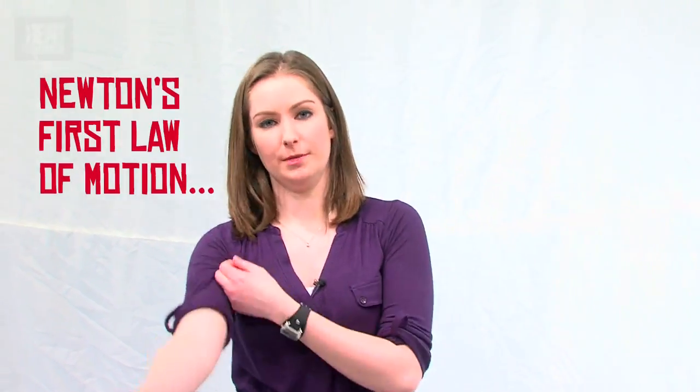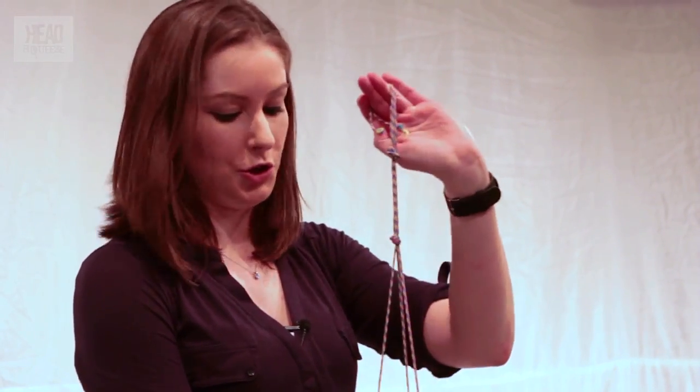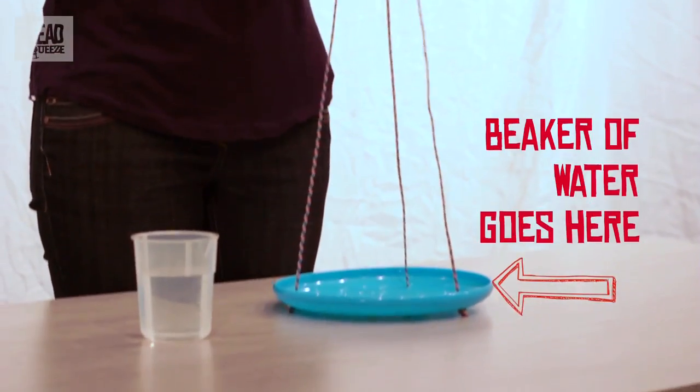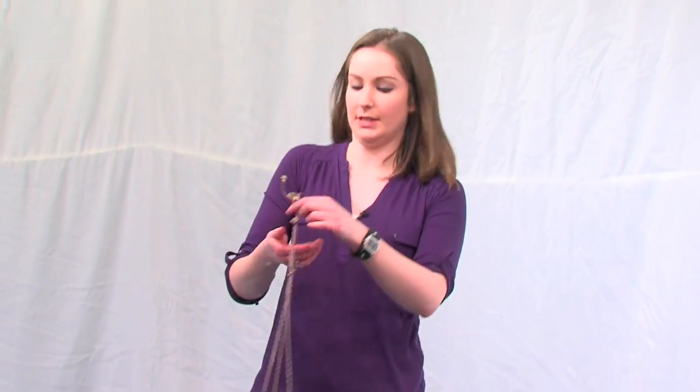So Newton's first law of motion states that an object will not move unless acted upon by a force. Once moving, that object will continue to move in a straight line forevermore unless it's acted upon by another force. Now we can apply this law to my spinning Frisbee with the beaker of water on top of it. But first things first, we're just going to make sure that my Frisbee spins in a nice circle. So I'm just going to put my beaker of water on the ground for the moment.